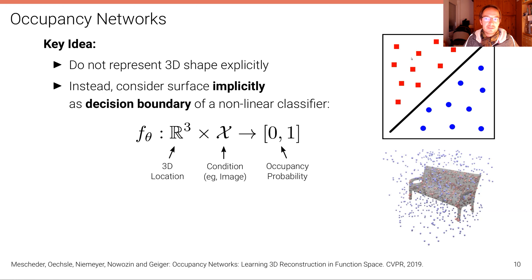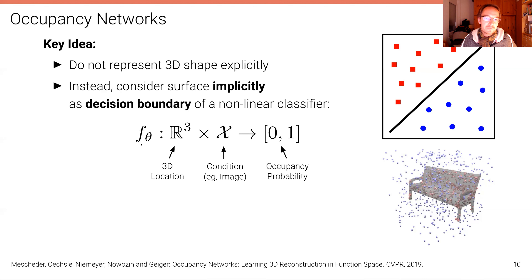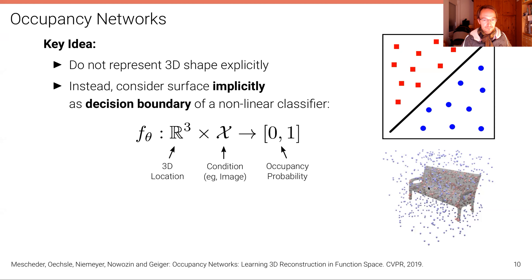The idea is pretty simple. You have a nonlinear classifier that separates points inside from points outside an object — for example, this bench. The machine learning problem is how to learn the weights of the classifier such that exactly that decision boundary is obtained. Mathematically, there is a function f with parameters theta that takes as inputs a 3D location and a condition — an image encoded into a 128-dimensional latent code vector — and outputs an occupancy probability: 0 if the point is outside, 1 if it is inside.